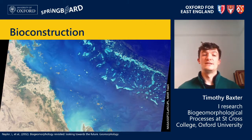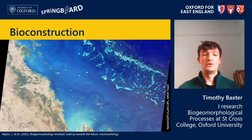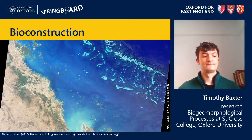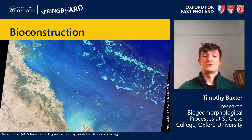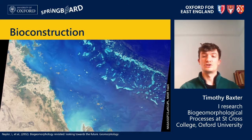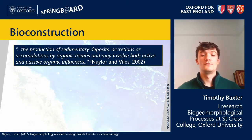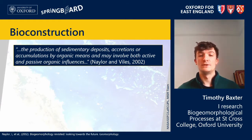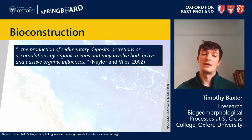So let's look at each of these three main processes in a bit more detail. Firstly, bio-construction. This image shows the Great Barrier Reef off the coast of Australia. Coral reefs, such as the Great Barrier Reef, are an excellent example of a bio-construction. The process of bio-construction involves the production of sedimentary deposits, accretions or accumulations by organic means, and may involve both active and passive organic influences. Essentially, bio-constructions are landforms constructed by animals, plants and other organisms.